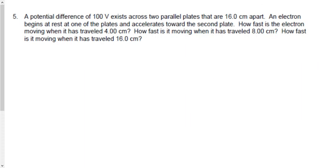Let's take a look at question number 5 from homework. It said a potential difference of 100 volts exists across two parallel plates that are 16 centimeters apart. An electron begins at rest at one plate and accelerates toward the second plate. How fast is the electron moving when it's traveled 4 centimeters, 8 centimeters, and 16 centimeters? This electron is speeding up — it begins at rest and accelerates — that's like a car going down a hill: a conversion of potential to kinetic energy.